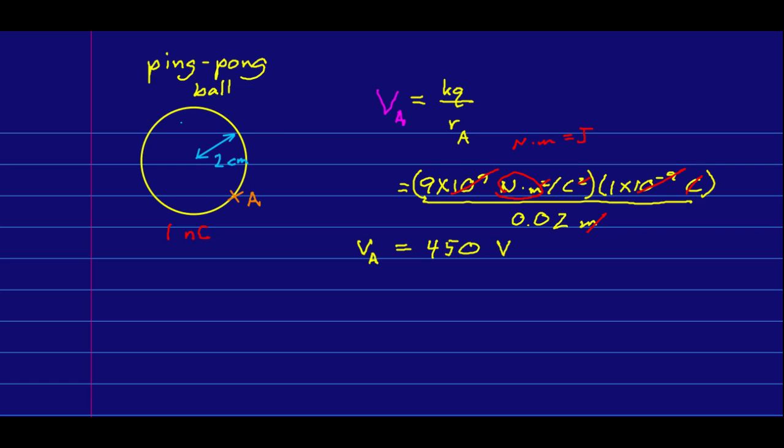So we see that under the convention that the potential is zero at infinity, the potential on the surface of the ping pong ball is about 450 volts, and that's for a ping pong ball with one nanocoulomb of charge on it. It's easy to get more than that on it. That might surprise you.